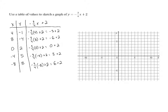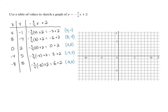We have five points here that we're going to plot. We've got four, negative one. We've got eight, negative four. We've got zero, two. Negative four, five. And negative eight, eight. Each one of those x values gives us a y value, and each pair of those gives us a point that we can plot.